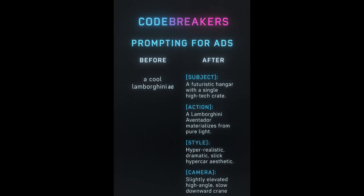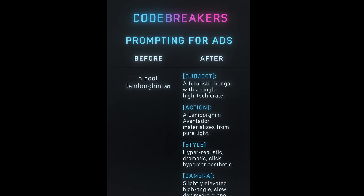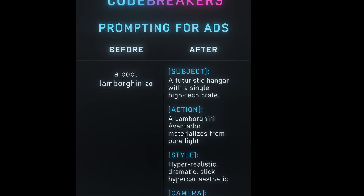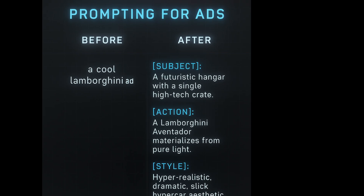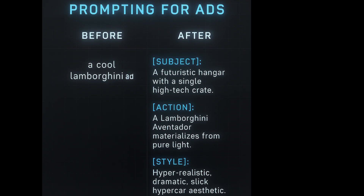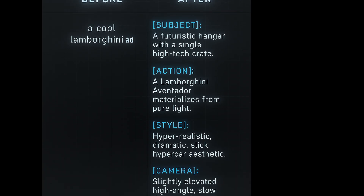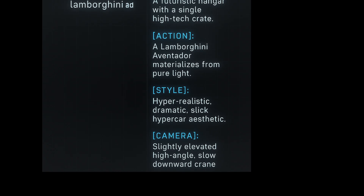Basically, JSON is just a way of organizing your request. Instead of writing one long confusing sentence, you're giving the AI a recipe. You break it down into clear parts: ingredients are your subject, method is the action, and plating is your camera style. It removes all the guesswork for the AI, which means you get a much better result.